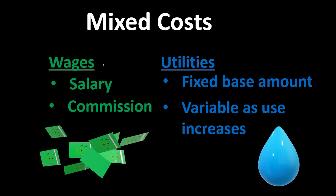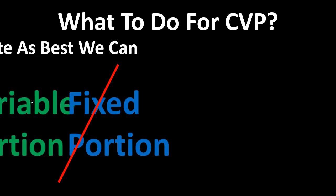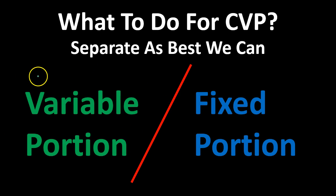Not all mixed costs behave the same way — wages and utilities act differently. For CVP purposes we separate them as best we can. It is not a perfect world; we're going to be using estimates. We need to break mixed costs out between fixed and variable because that's what the contribution margin income statement requires. We have to go through all those mixed costs and figure out the best way to do that.